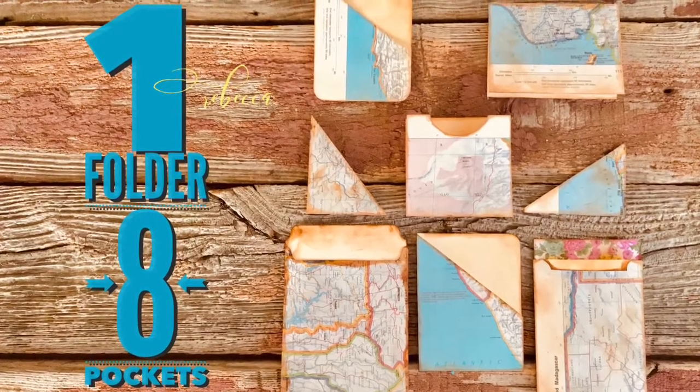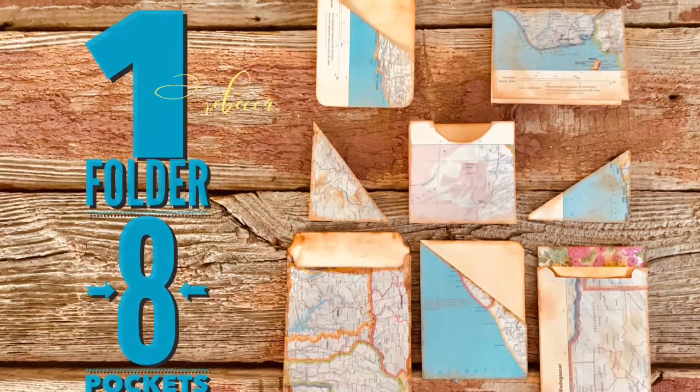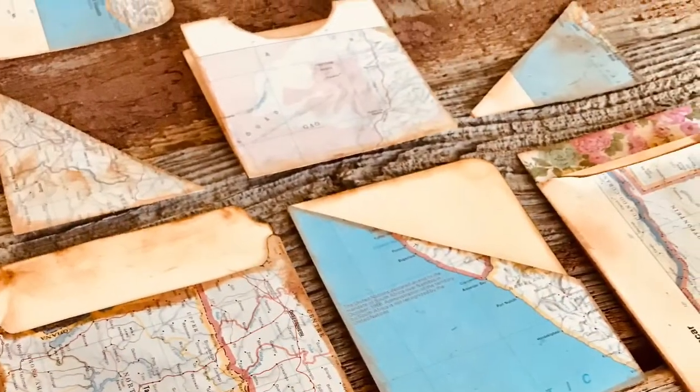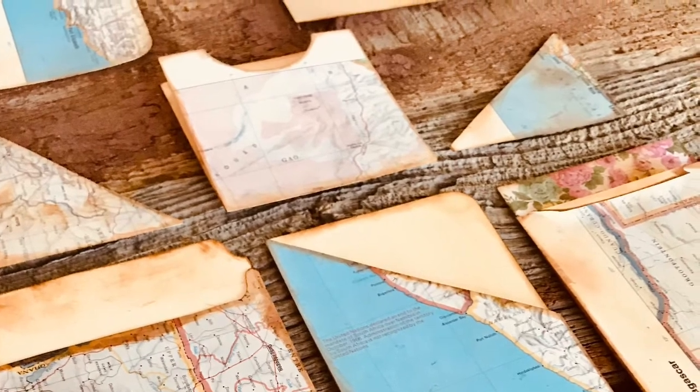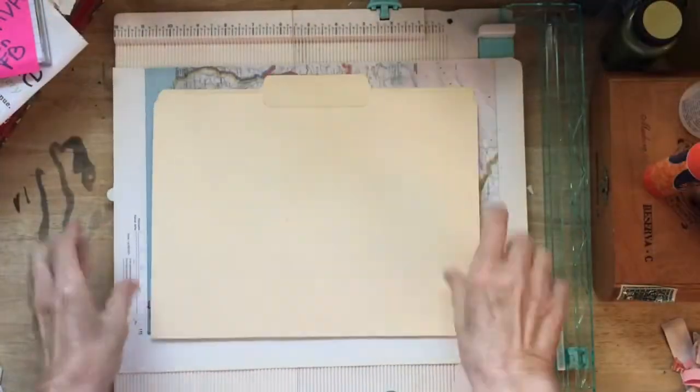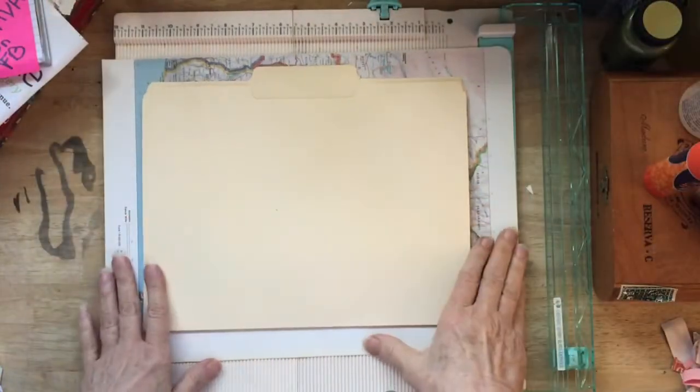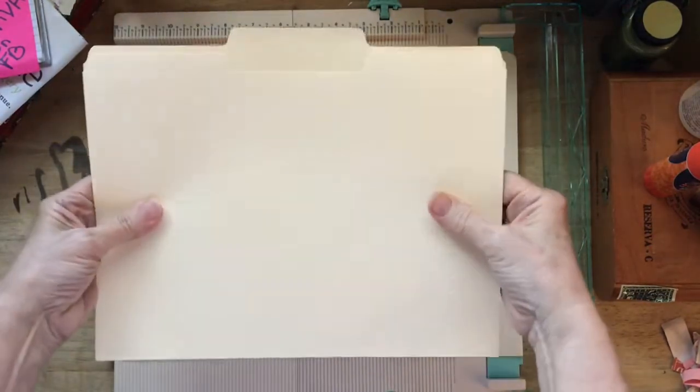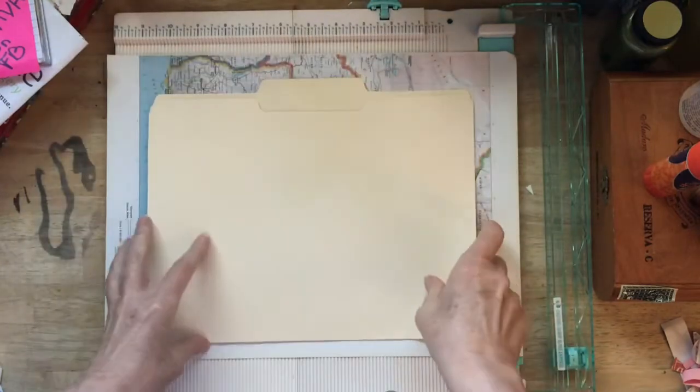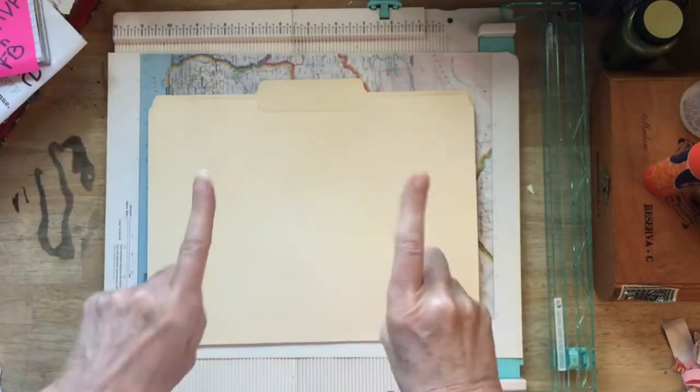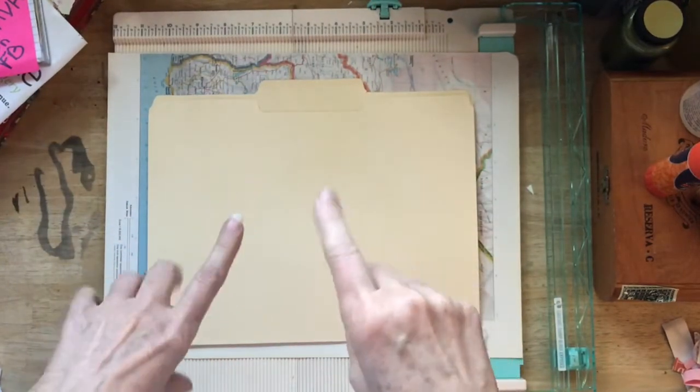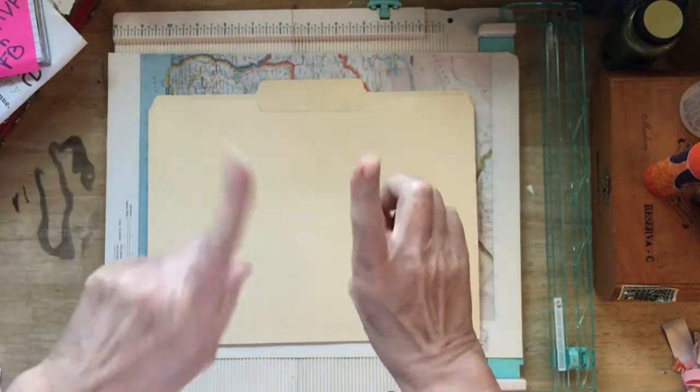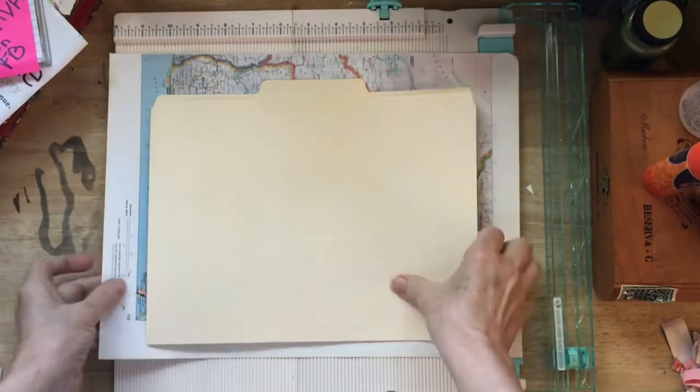Hey everyone, it's junk journal time. Today it is one file folder, eight ways. I am going to show you how to take this one simple manila file folder and make eight different things for your junk journal out of it. And if you are careful, you can make even more. But today we're just going to head for eight.